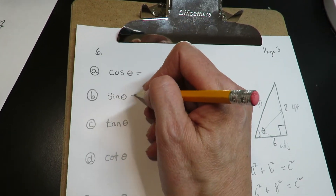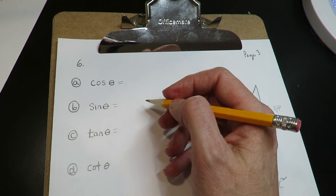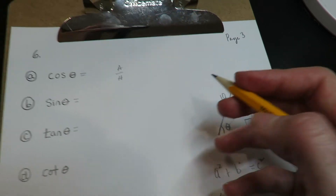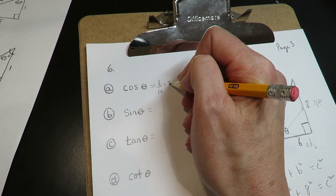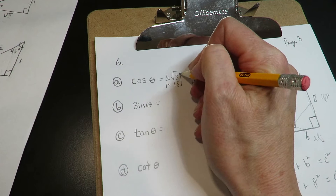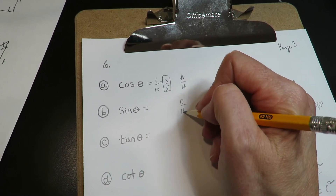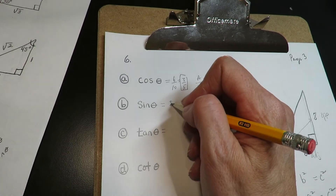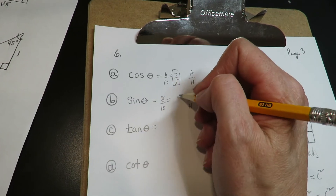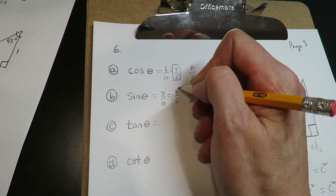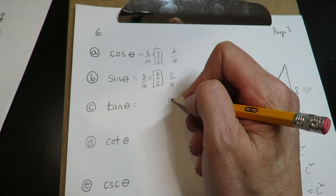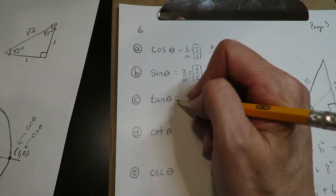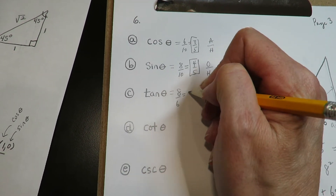Now we'll go through all six trig functions. Cosine is adjacent over hypotenuse, so for this triangle it's six over ten, which reduces to three over five. Sine is opposite over hypotenuse: opposite is eight over ten, which reduces to four fifths. Tangent is opposite over adjacent: that's eight over six, which reduces to four over three.